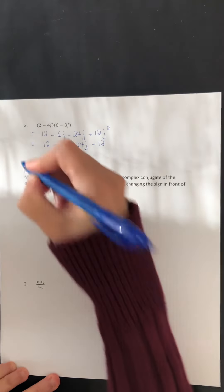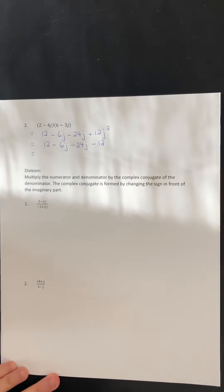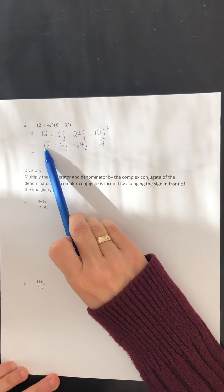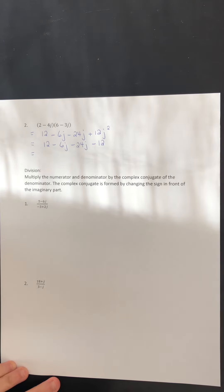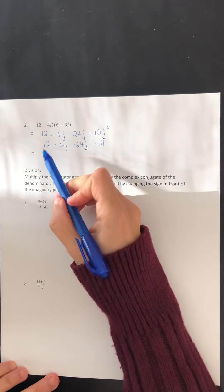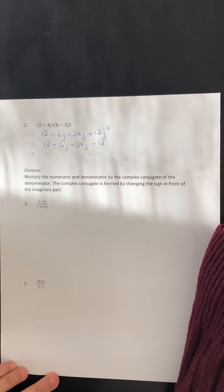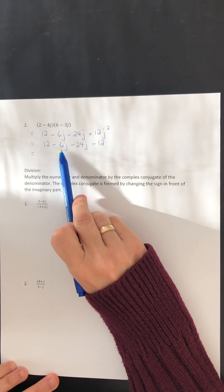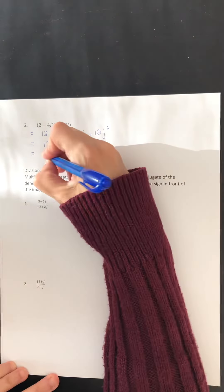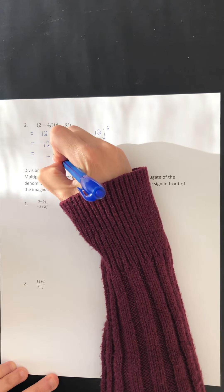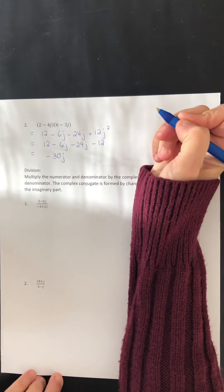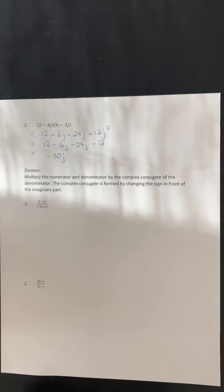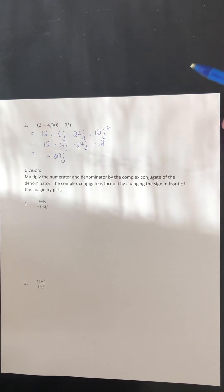Finally, we collect like terms. The real part is 12 minus 12, which equals 0. The imaginary part is negative 6j minus 24j, which is simply negative 30j. So here we end up with a purely imaginary answer: negative 30j.